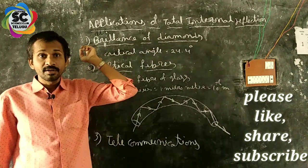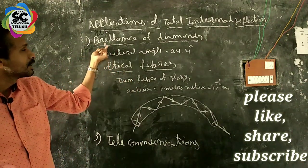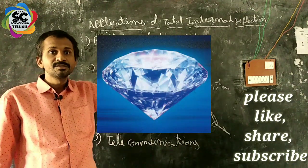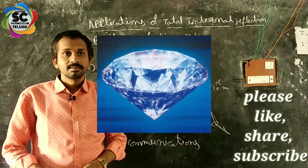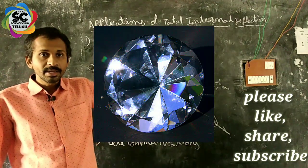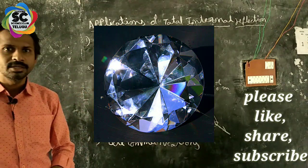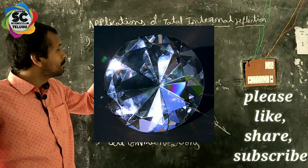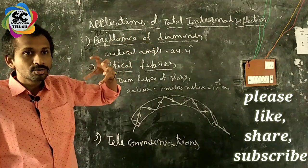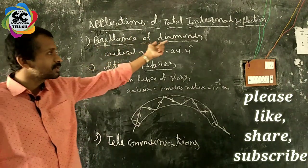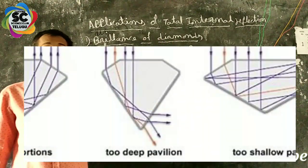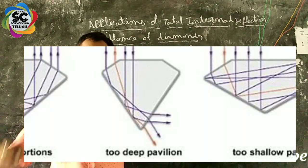Because of total internal reflection, billions of diamonds shine very well. Diamond is glowing because of brilliance. Brilliance means high glowing of light. The brilliance of diamond is because of multiple total internal reflections happening inside the diamond. Why do multiple total internal reflections happen in the diamond?